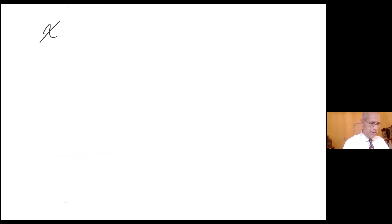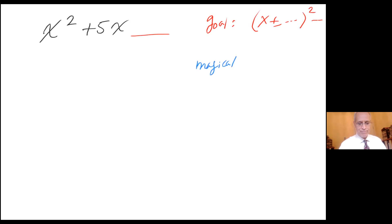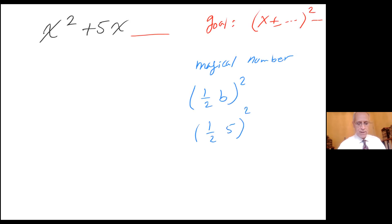How about if I have x squared plus 5x? Remember that the goal is to have some x plus or minus something, quantity squared. And the magical number that I need to achieve that is one half of b, quantity squared. So one half of 5, quantity squared: one half times 5 is 5 over 2, and 5 over 2 squared gives me 25 over 4.